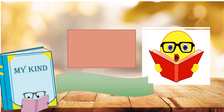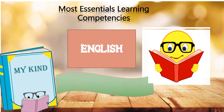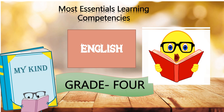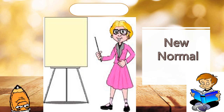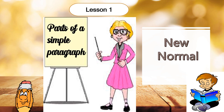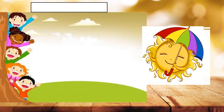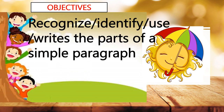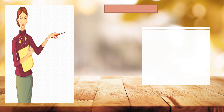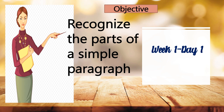Good morning everyone and welcome to the most essential learning competences in English for grade 4. Lesson number 1 for the new normal — the topic is parts of a simple paragraph. Our objectives: recognize, identify, use, and write the parts of a simple paragraph. For day 1, the objective is to recognize the parts of a simple paragraph.